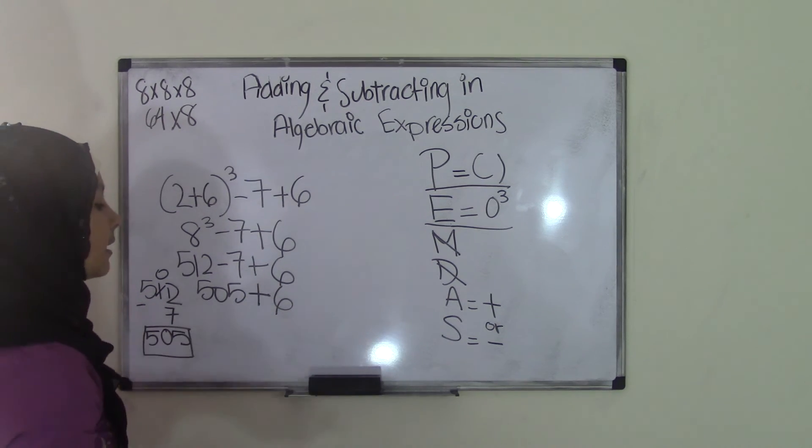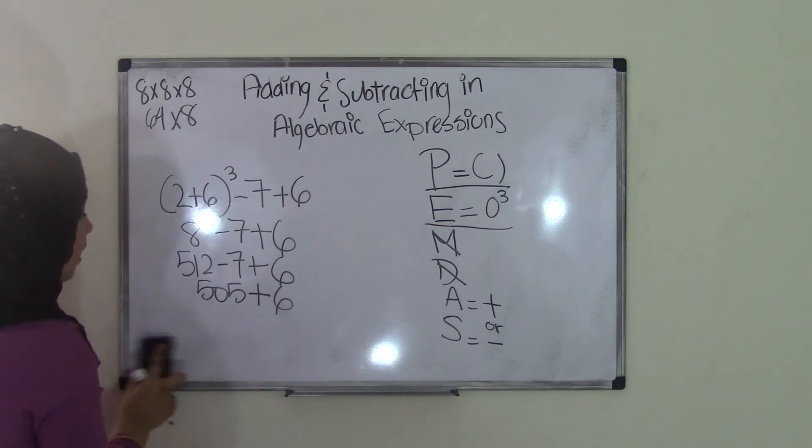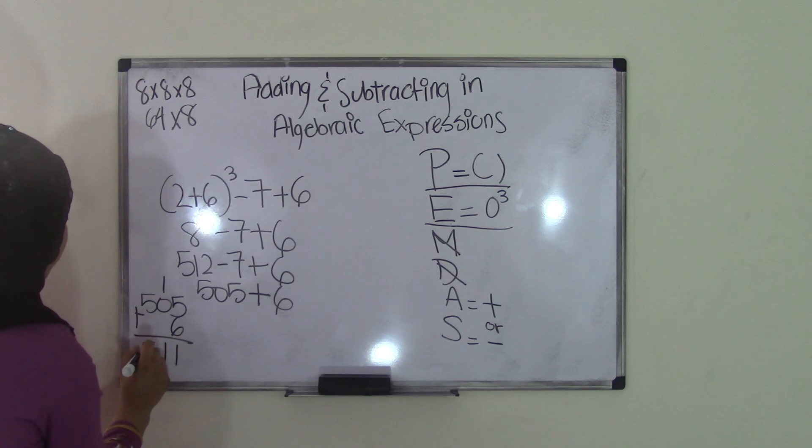So now the last thing left to do is addition. So we do 505 plus 6. 6 plus 5 is 11, carry the 1. 1 plus 0 is 1. Bring down the 5, and we have 511.